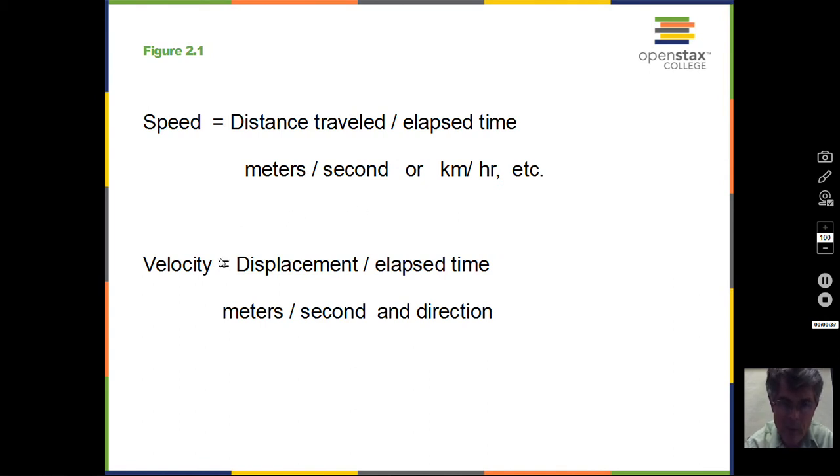Velocity is a vector and requires displacement, not distance. And again, that displacement is the final position minus the initial position. Keeping track of direction, that might be keeping track by virtue of the plus or minus nature of displacement. We divide by the elapsed time. So again, meters per second or kilometers per hour, and we'll have a direction attached.